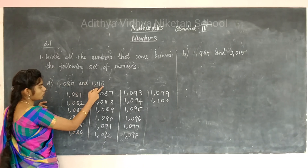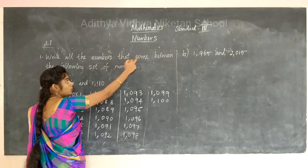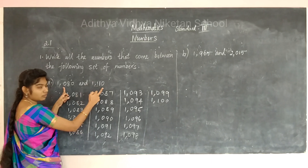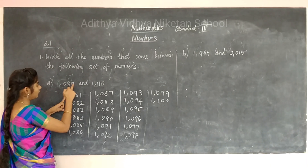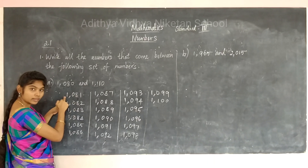So the between numbers are written only as asked. We start after 1080, so we begin from 1081 and write up to 1110. The second sum — between 1,965 and 2,015 — you are going to take as your assignment.